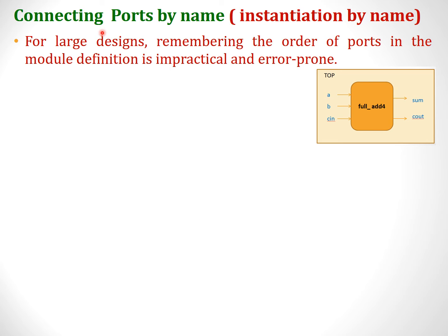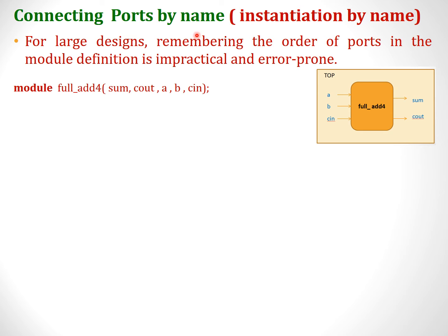In the second method — connecting ports by name, also known as instantiation by name — assume there are large designs with more than hundreds of inputs. Remembering the order of the ports looking into the main module is highly impractical and there is always a chance of error, especially when we have more inputs to deal with. For such cases, connecting the port list by name is the best method, because in this case we do not need to worry about the order — we can interchange the order.